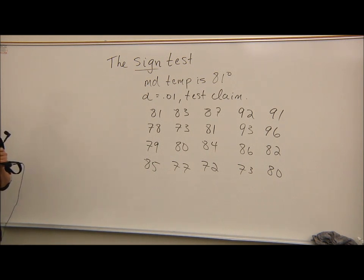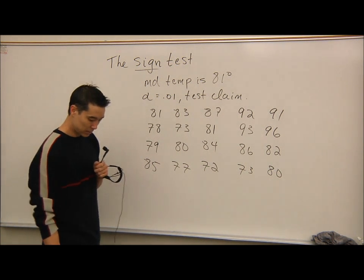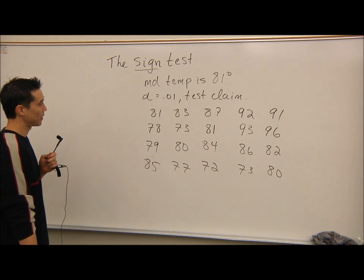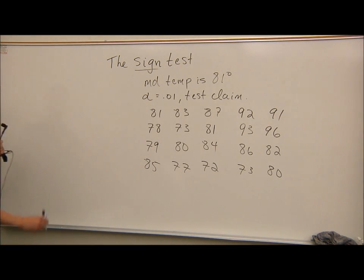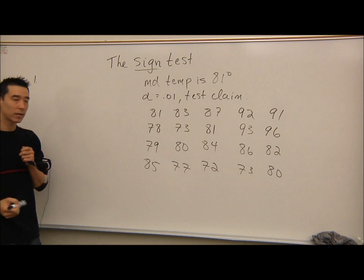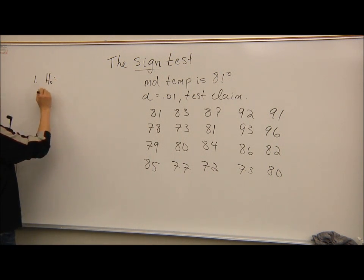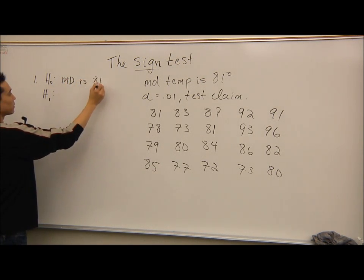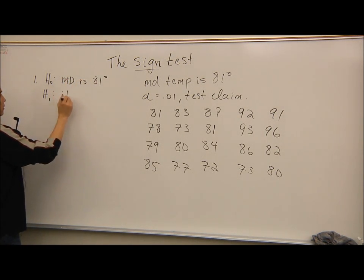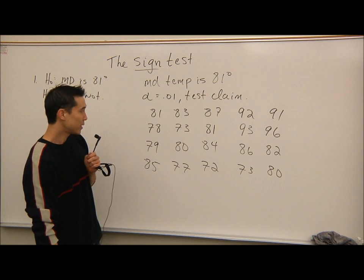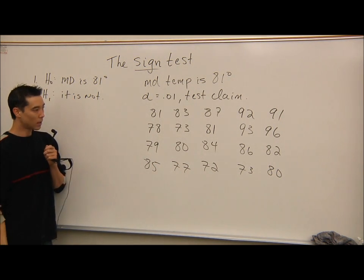The claim is that the median temperature is 81 degrees. That's an equal sign, so it goes in H0. H0: median equals 81 degrees. H1: median not equals 81 degrees.